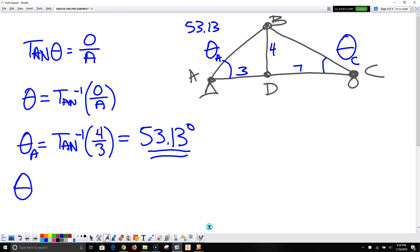Angle B, using the same calculation, tan minus 1. The opposite is 4, and the adjacent is 7. So 4 over 7, we calculate that, we get 29.74 degrees.